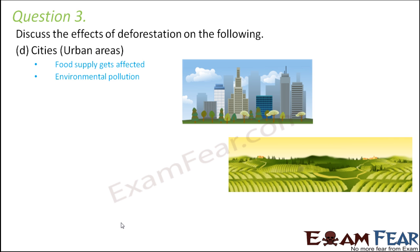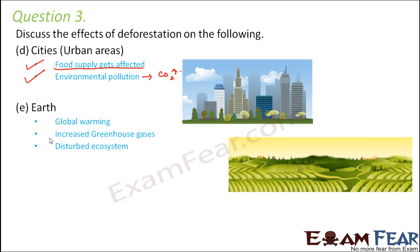Effects on cities: since agriculture in villages is adversely affected, there will be no proper food supply to cities. Food supply is affected because grains, vegetables, and everything come from agriculture. It will also cause environmental pollution due to increased levels of carbon dioxide. On the earth as a whole, it will cause global warming and increased greenhouse gases, and will disturb the entire ecosystem — the dependency of different living organisms on each other will get disrupted.